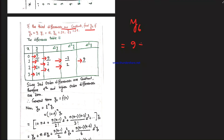For y6 with n=6: y0=9, nC1 delta y0 = 6 times 9 = 54; nC2 del^2 y0 with del^2 y0 = minus 7, nC2 = 15; nC3 del^3 y0 with del^3 y0 = 9, nC3 = 20. Computing: 9 plus 54 minus 105 plus 180. That gives the calculated value of y6.